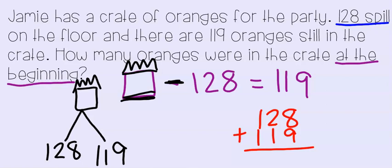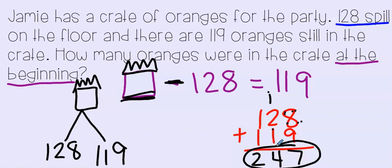128 plus 119. Let's start in the ones place. We have 8 plus 9. I'm going to use my touch points — start at 9 and count up 8, which gives us 17 ones. That means I made a new 10. In the tens place: 2 plus 1 plus 1 carried over gives 4. No new hundreds. And 1 plus 1 is 2. So Jamie had 247 oranges at the beginning before they spilled out. Even though in this problem we had a subtraction sign, we actually had to add to find that total top number.